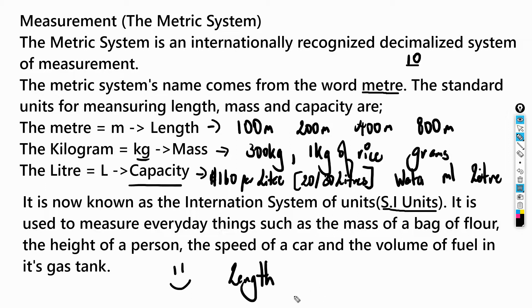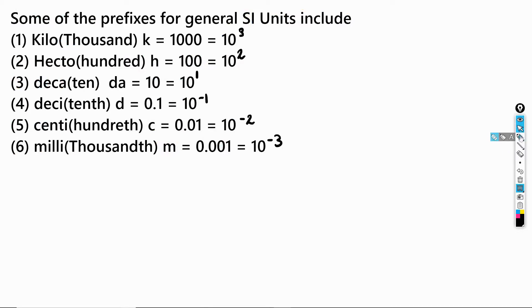We're going to look at some prefixes for general SI units. The first one is kilo, which is k. K means 1000, so for example, kilogram means 1000 grams. This k represents 10³, which equals 1000.